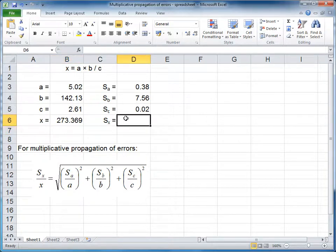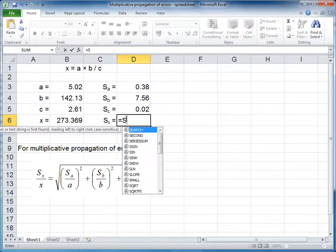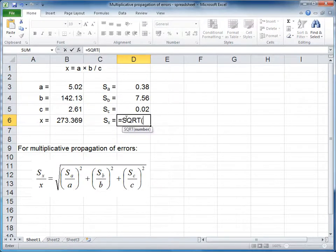To calculate the error of X, we press equals SQRT, open brackets to get the square root, and now we need to add another bracket.